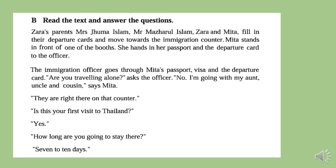There is a text again about the traveling. Zara's parents, Mrs. Juma Islam and Mr. Mazharul Islam, Zara, and Mita fill in their departure cards and move towards the immigration counter. Mita stands in front of one of the booths. She hands in her passport and departure card to the officer. The immigration officer goes through Mita's passport, visa, and the departure card. 'Are you traveling alone?' asks the officer. 'No, I am going with my aunt, uncle, and cousin,' says Mita. 'They are right there on the counter.'